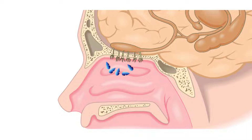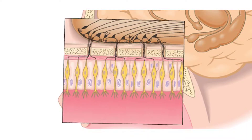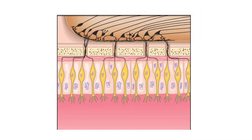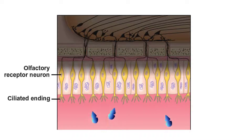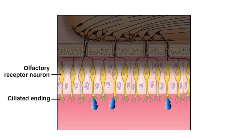The epithelium contains anywhere from 5 to 100 million olfactory receptors. Notice that each receptor is a neuron with a ciliated ending, bathed in mucus inside the nose. Odorant molecules make their way to these ciliated endings and stimulate the olfactory receptors, which fire an action potential initiating a nerve impulse.